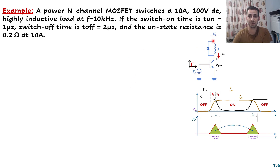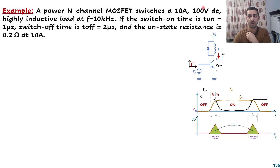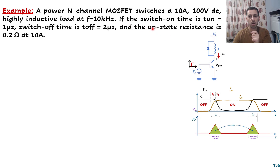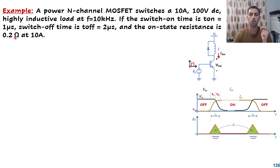Now let's go to the second question. Once I show it, try to stop the video and solve it yourself first. In this case we have an inductive load. A power channel MOSFET switches a 10 ampere load across a 100 volt supply — a highly inductive load, meaning it keeps 10 ampere continuous. The frequency is 10 kHz, Ton is 1 microsecond, Toff is 2 microseconds, and the on-state resistance RDS_on is 0.2 ohm at 10 ampere.